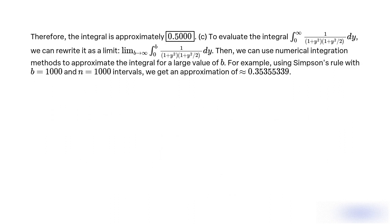To evaluate the integral from 0 to infinity of 1 divided by (1 + y² + y²/2) dy, we can rewrite it as a limit: lim b→∞ of the integral from 0 to b of 1 divided by (1 + y² + y²/2) dy. Then we can use numerical integration methods to approximate the integral for a large value of b.